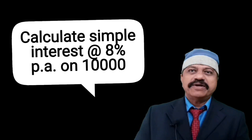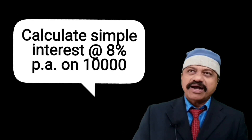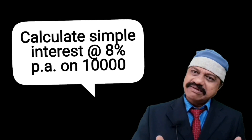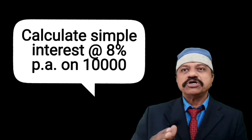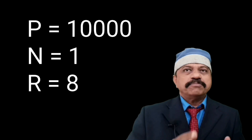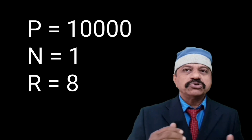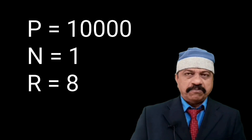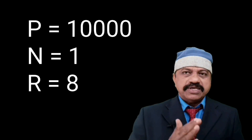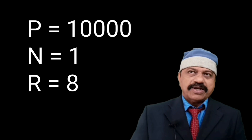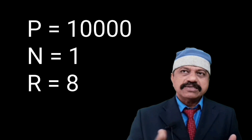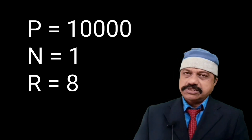Example 1: calculate simple interest at the rate of 8% per annum on 10,000. Here P is equal to 10,000, N is equal to 1 year, and R is equal to 8.